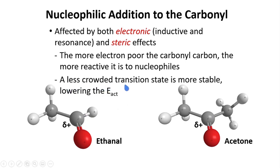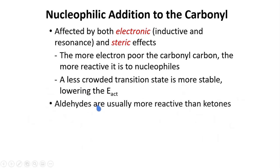A less crowded transition state is more stable, lowering the energy of activation. Comparing ethanal and acetone, the transition state involving acetone must be more crowded because it has two methyl groups compared to ethanal. So ethanal reaction should be faster by this measure. To generalize, aldehydes are usually more reactive than ketones.